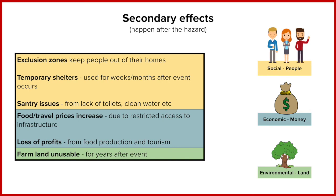In terms of secondary economic impacts, there are food and travel costs to consider. If crops have been destroyed as a primary impact, it becomes more expensive to source food, as it must come from further away or less supply means higher prices. Businesses that relied on growing crops, like farmers, or on trade and transport, like shops, face a loss of profit due to the lack of travel.